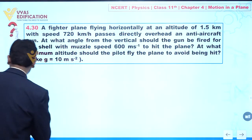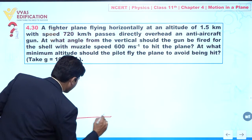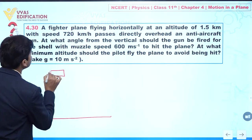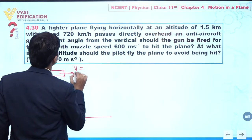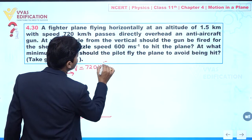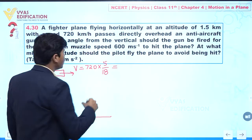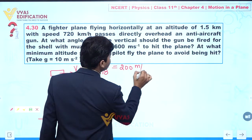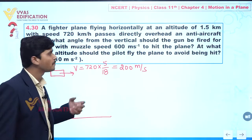So we can see — let us suppose this is the ground. Here we have a fighter plane. It is having a uniform velocity in horizontal direction of 720 kilometer per hour. We can convert it into meter per second. From here we can say this is 200 meter per second. So this is the velocity.